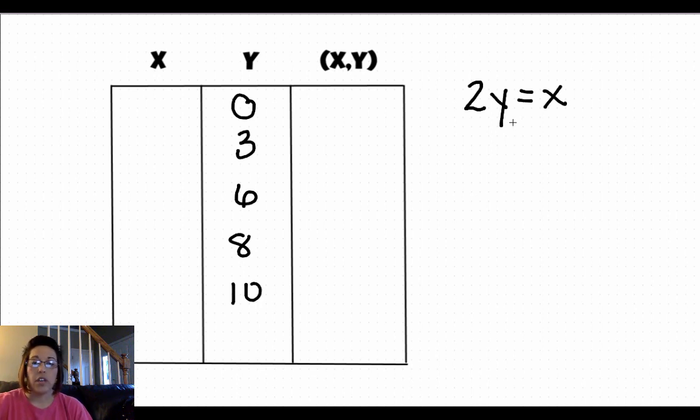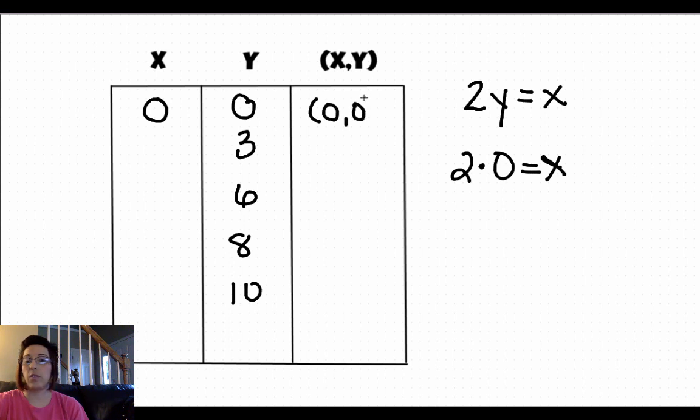So we go ahead and plug the y value in. 2 times 0 equals x. Well, 2 times 0 is 0. So our ordered pair becomes 0, 0. That is origin.